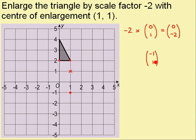I've got to multiply that by the scale factor. So minus 2 times minus 1 is 2 and minus 2 times 1 is minus 2. Now back to the centre enlargement and I use this column vector. So that's right 2, down 2. So right 2, down 2. Now that I've got two corners, I can join them together.